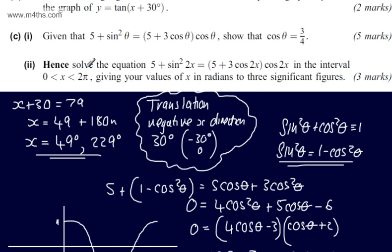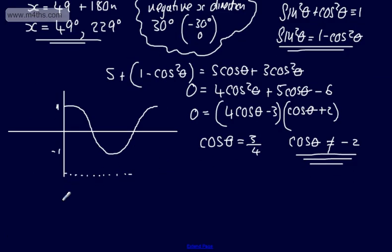In the second part, it says, hence solve the equation 5 plus sine squared 2x is equal to the quantity 5 plus 3 cos 2x multiplied by cos 2x in the interval where x is between 0 and 2 pi, giving your values of x in radians to 3 significant figures. The question carries 3 marks. If we look here, these are nearly identical. The only difference is that theta is now 2x. So what I'm going to write then is let theta be equal to 2x.